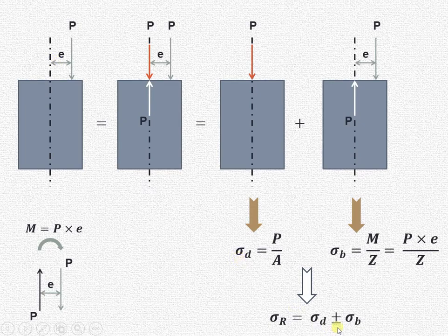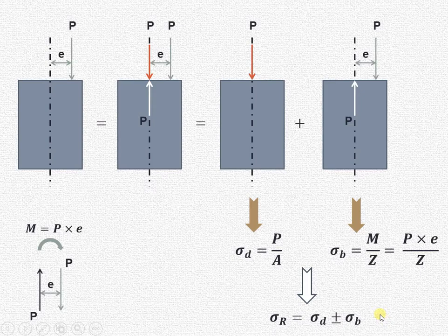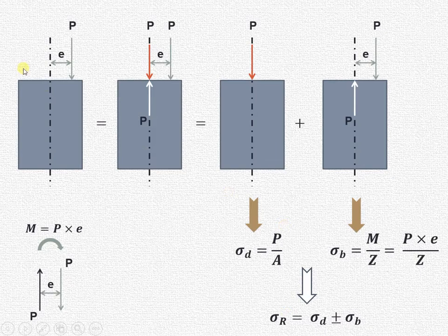The resultant stress due to eccentric loading is direct stress plus or minus bending stress. We use the plus or minus sign because bending stress is positive if tensile and negative if compressive; conventions depend on the application. In conclusion, the eccentric load will always produce both direct and bending stresses. Let us see with the help of an example how we can apply this concept.